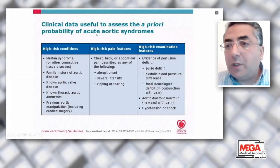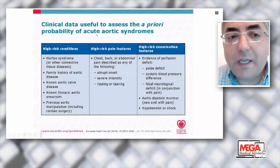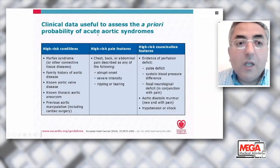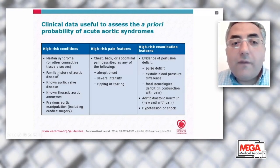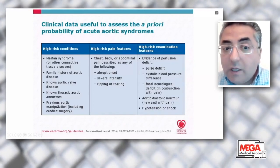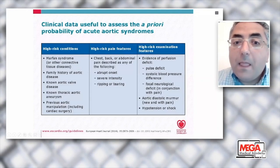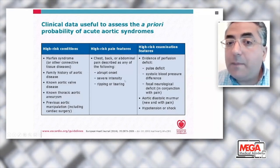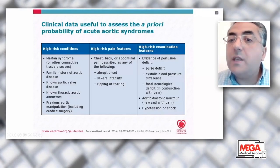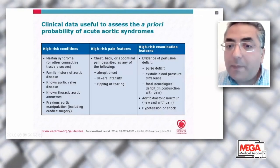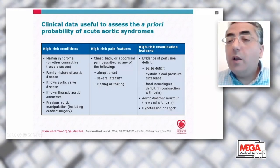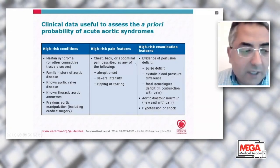Patients typically present with acute chest pain. Assess high-risk conditions: Marfan syndrome, family history of aortic disease, known aortic valve disease, prior thoracic aortic aneurysm, and previous aortic manipulation including cardiac surgery. High-risk pain features include chest, back, or abdominal pain with abrupt onset, severe intensity, and ripping or tearing quality. High-risk examination findings include pulse deficit, systolic blood pressure difference between arms, focal neurological deficit in conjunction with pain, new aortic diastolic murmur suggesting acute aortic regurgitation, and hypotension or shock signifying bleeding.